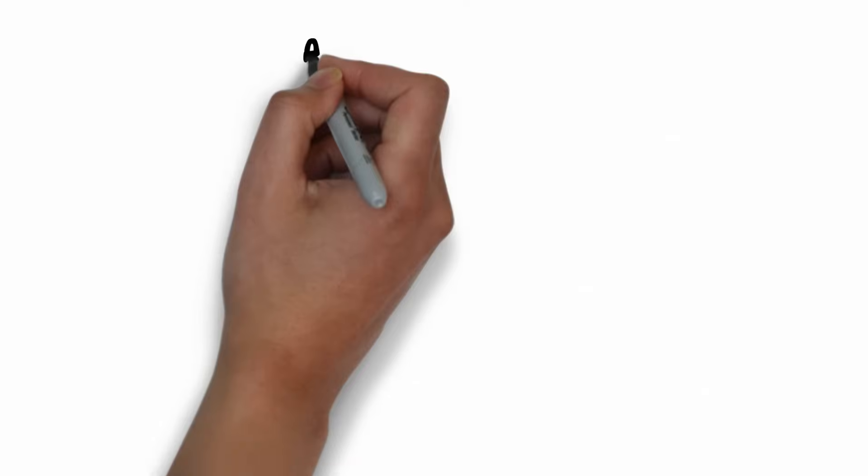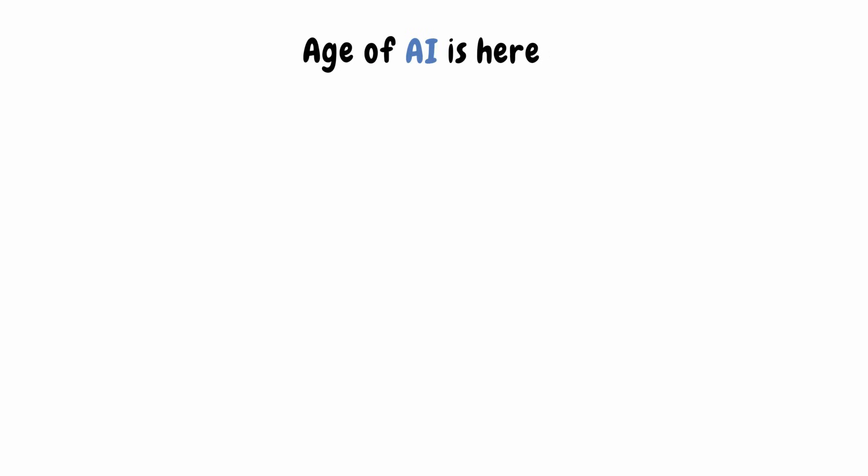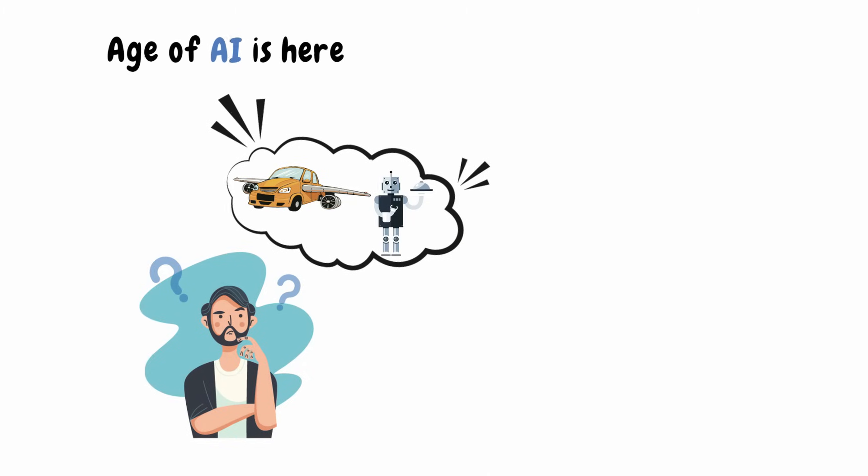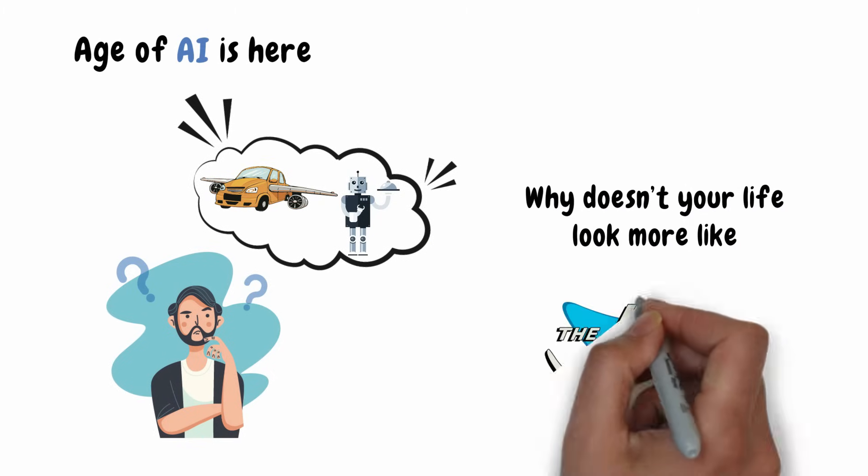They say that the age of AI is here. But then you might be wondering, why don't you see flying cars or robotic maids bringing you lunch? Why doesn't your life look more like the Jetsons?